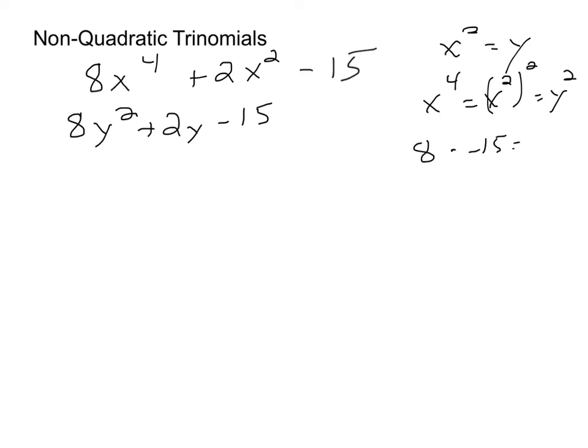8 times negative 15 is going to be negative 120. That was a lot of factors of 120. So I'm just actually going to list them all. You don't have to list all of them, but once you get to a certain point, it's kind of easy just to keep them organized to make sure that you have every pair that you need.